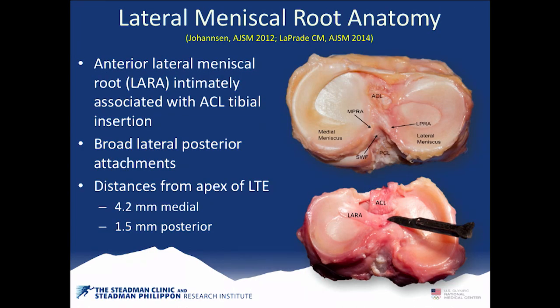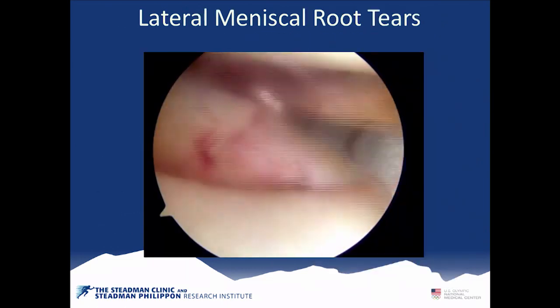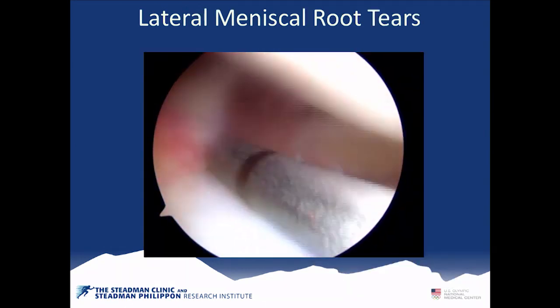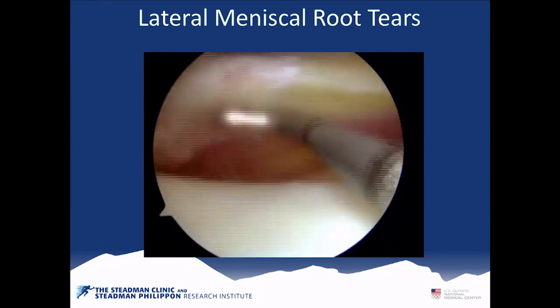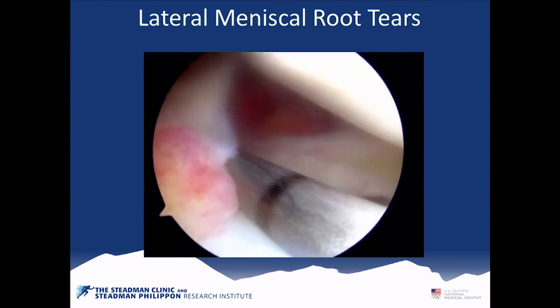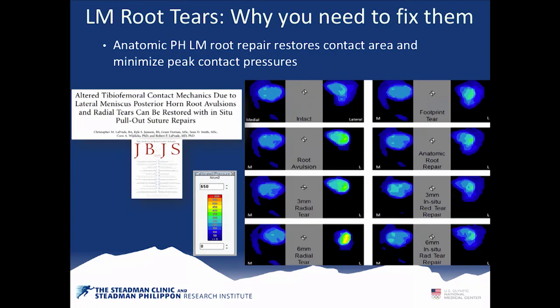Lateral meniscus root tears are something we see a lot more than we ever thought. The lateral meniscal attachment is only about five millimeters back from the apex of the lateral tibial eminence, so it's very close to the ACL attachment site. These commonly appear as tears close to or within a centimeter of the attachment site. Lateral meniscus root tears actually do worse than medial ones in terms of overall stress on the joint. With a six-millimeter radial tear left in place or removed, the joint will be significantly overloaded.